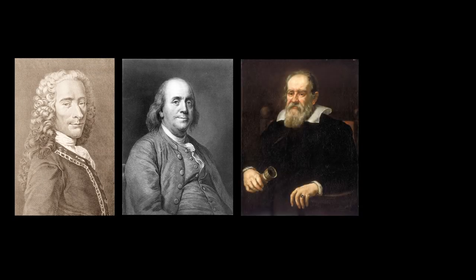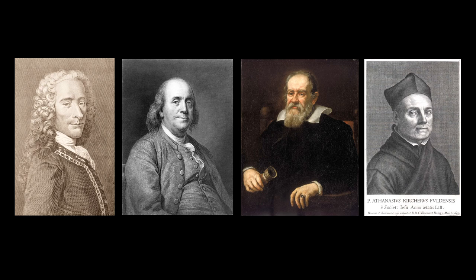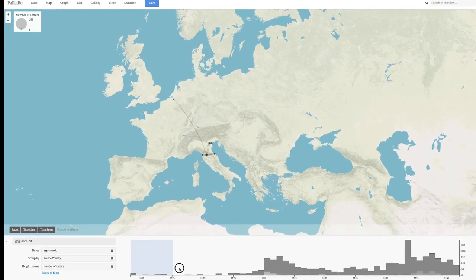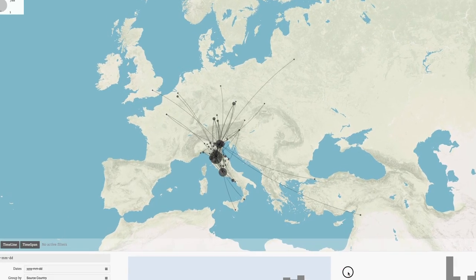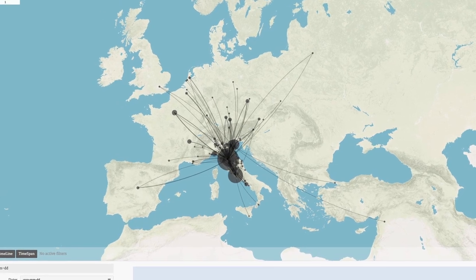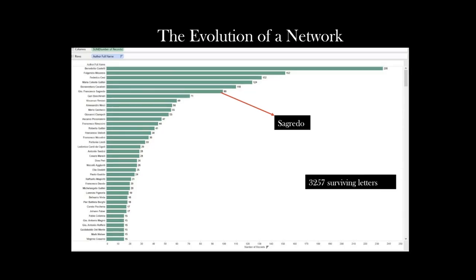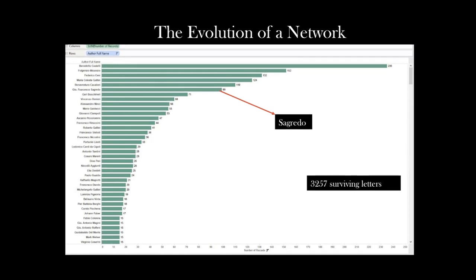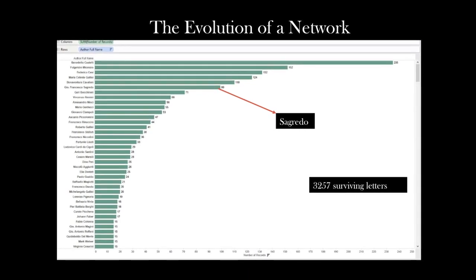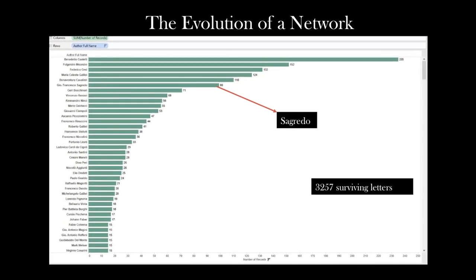When we go to study correspondence of an especially important figure like Voltaire, Franklin, or Galileo, they are the protagonist of the story. In a project like this, we've actually reversed that. Virtually every correspondence we've looked at has proven that there are many really important people in the network that we've ignored — people we simply don't know because, in retrospect, they weren't famous.